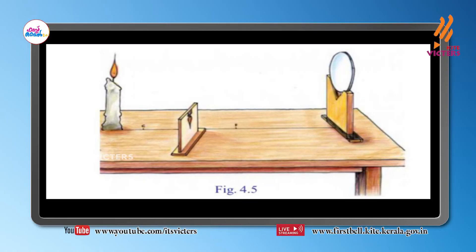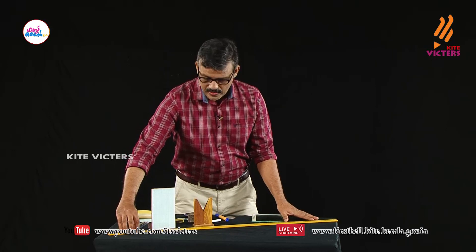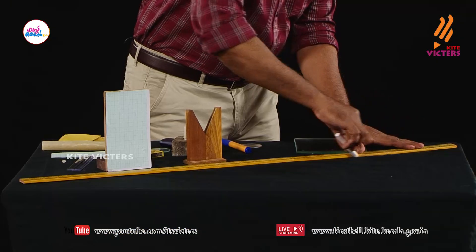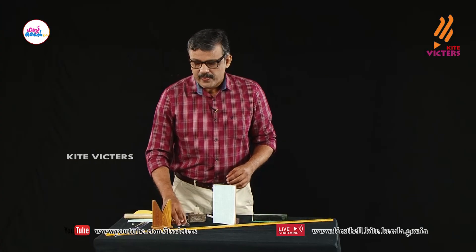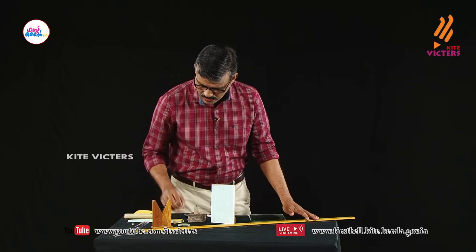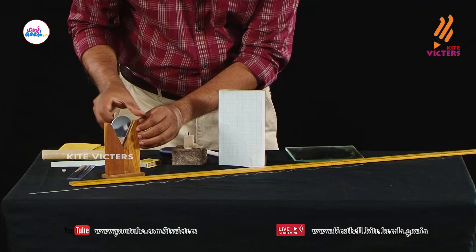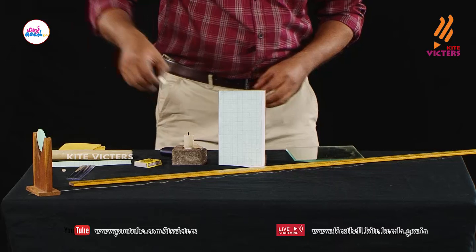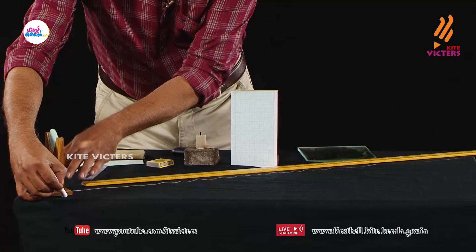We also need a candle as the object and a matchbox. I am drawing a straight line on the table and placing the concave mirror at one end of the line, marking its position. The focal length of the mirror is 10 centimetres.